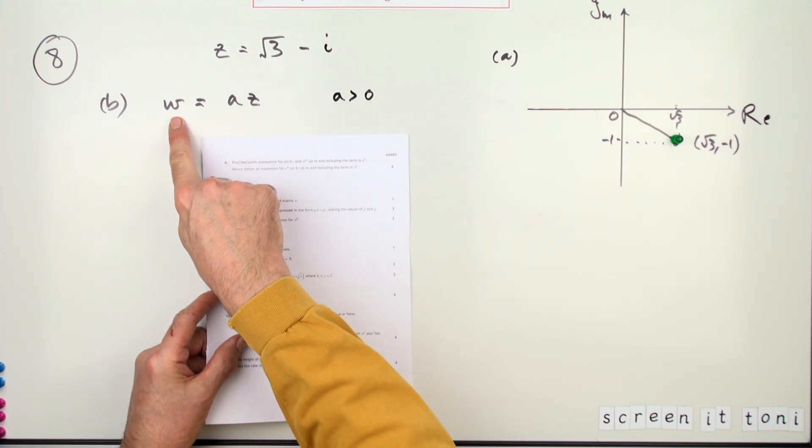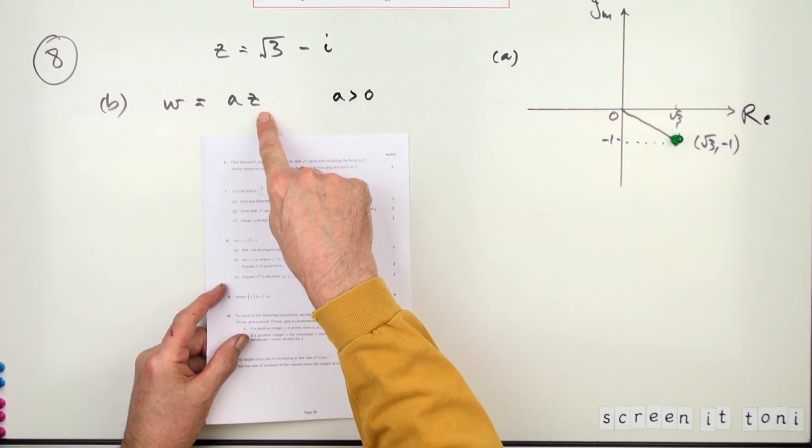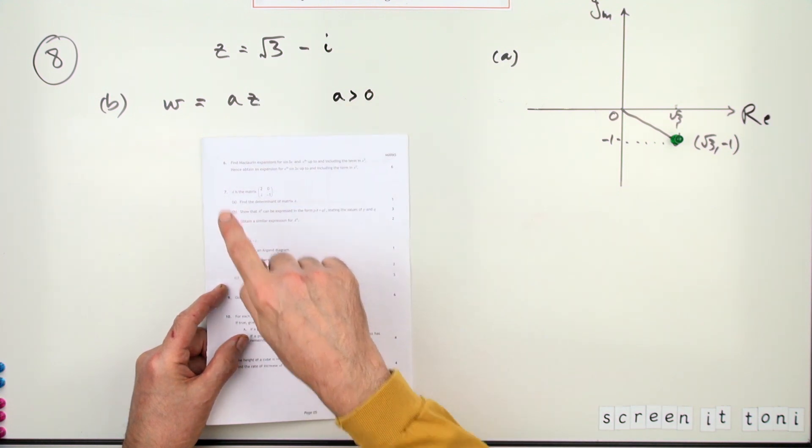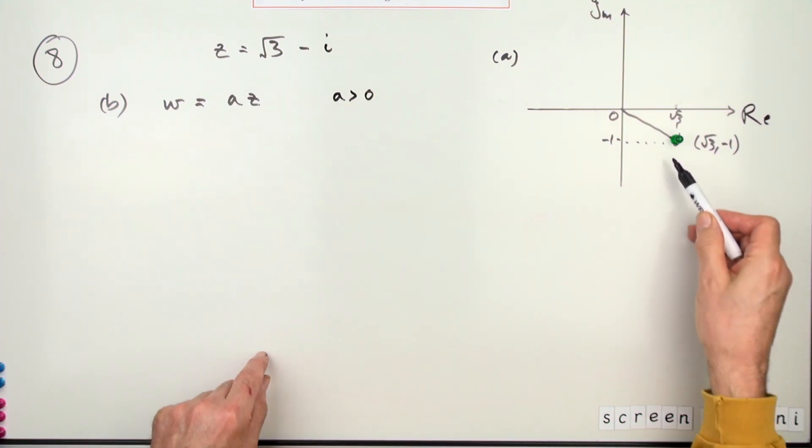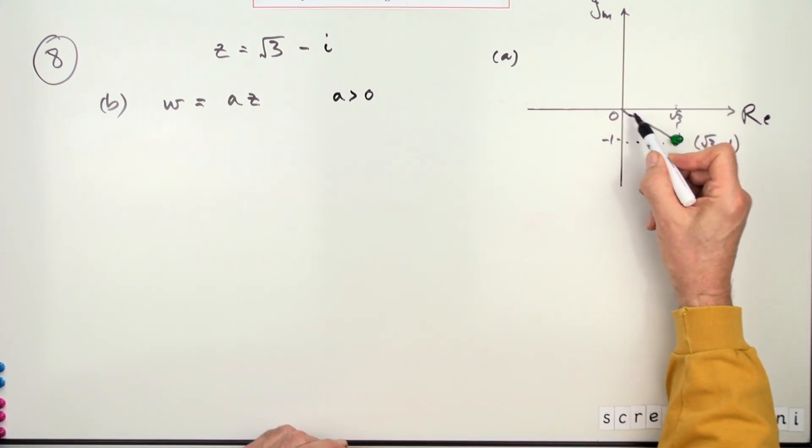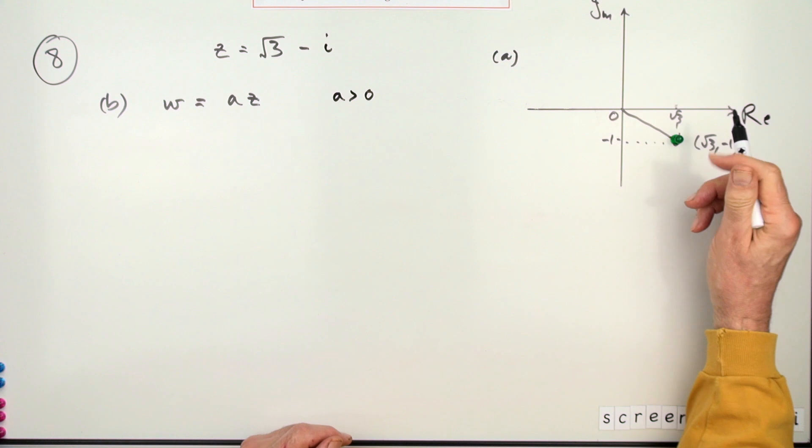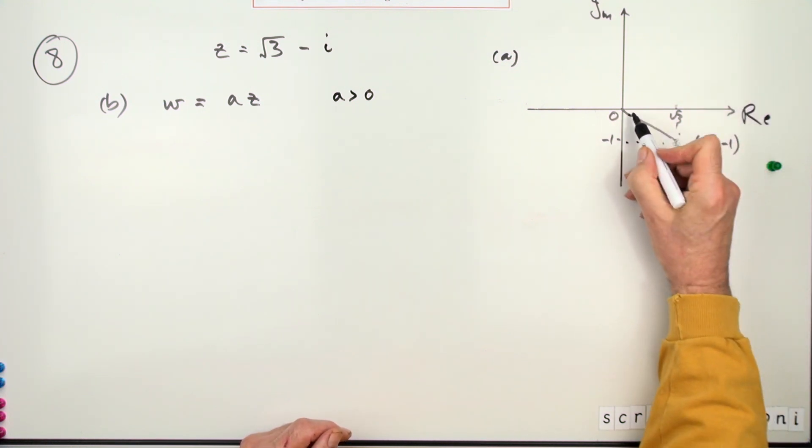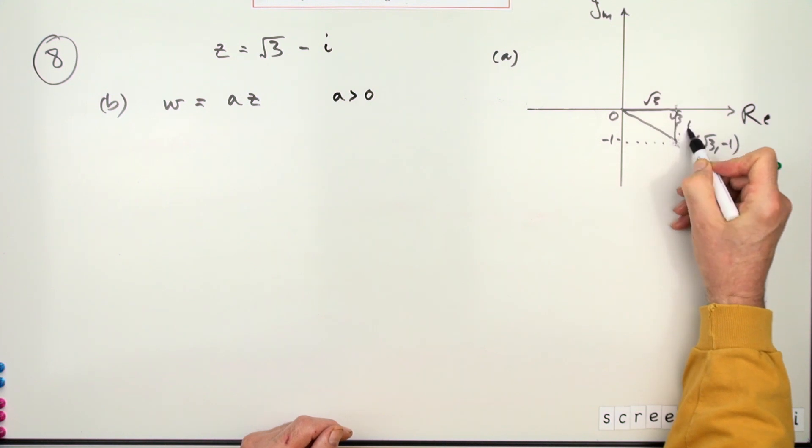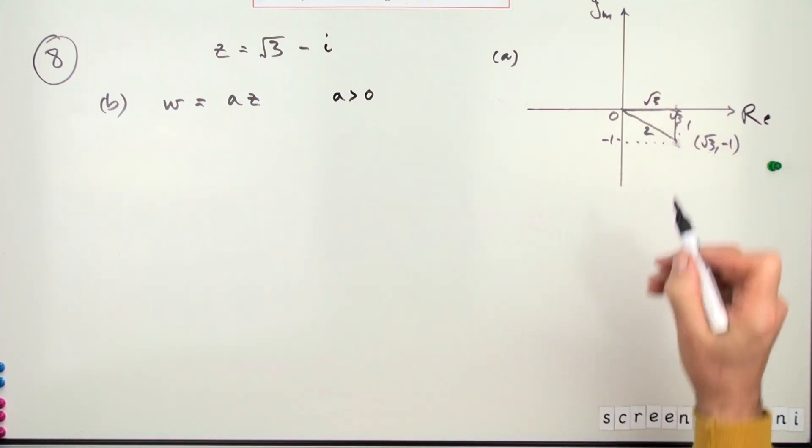Now part B: let w be some multiple of that complex number, where that multiple is greater than zero. Write this in polar form. Well, first of all, what's z in polar form? Oh, you recognize the triangle—you don't need to go through it all. I'll just pop that mark to the side now, because it was root three for that side and it was one for this side, so it must have been two for that part.